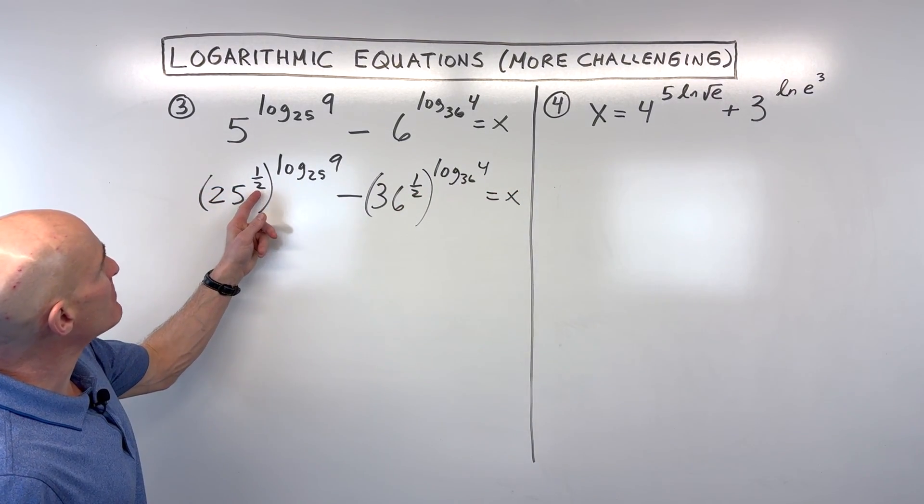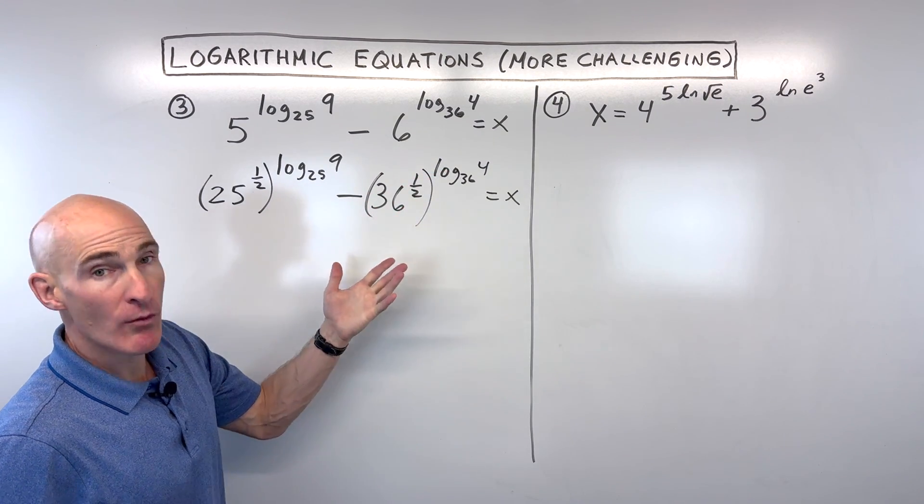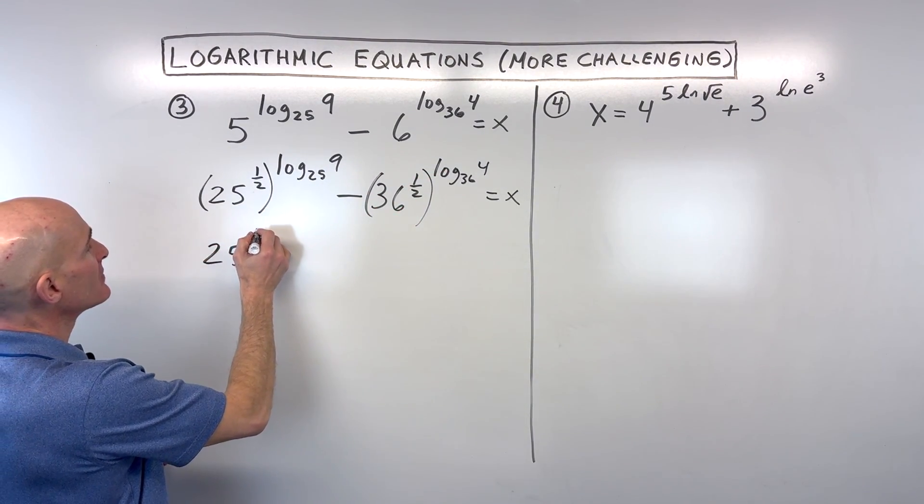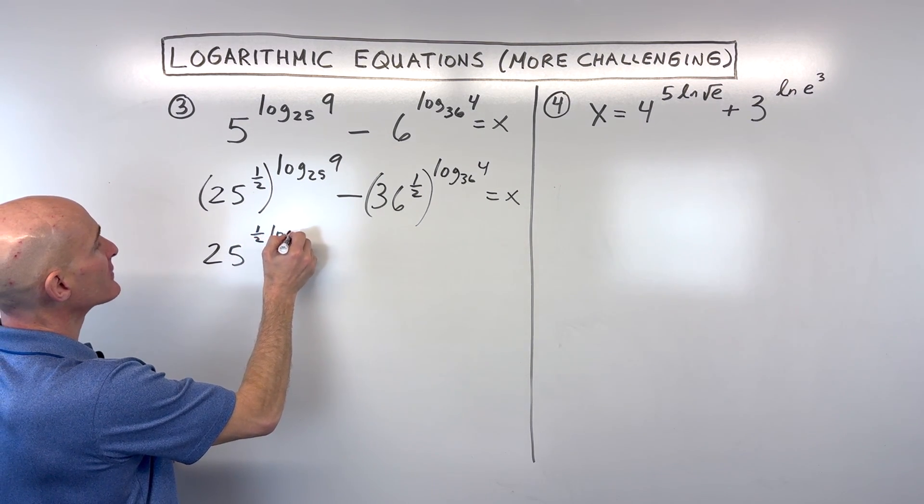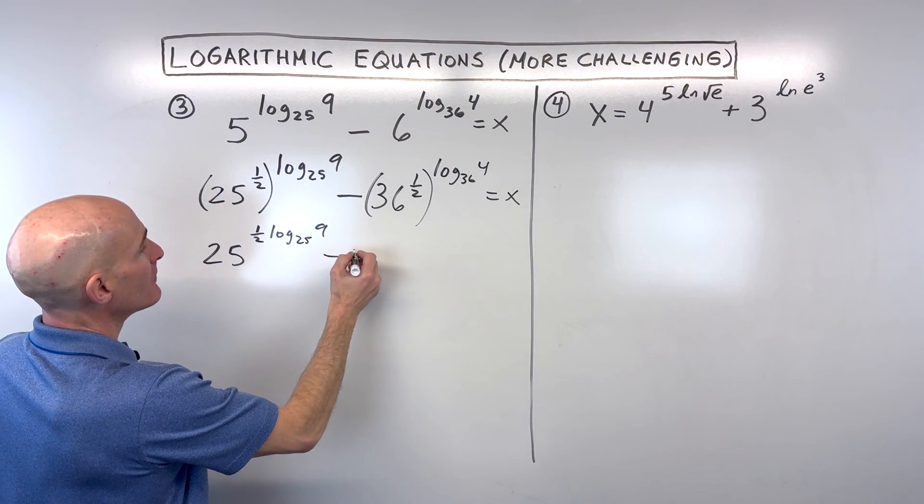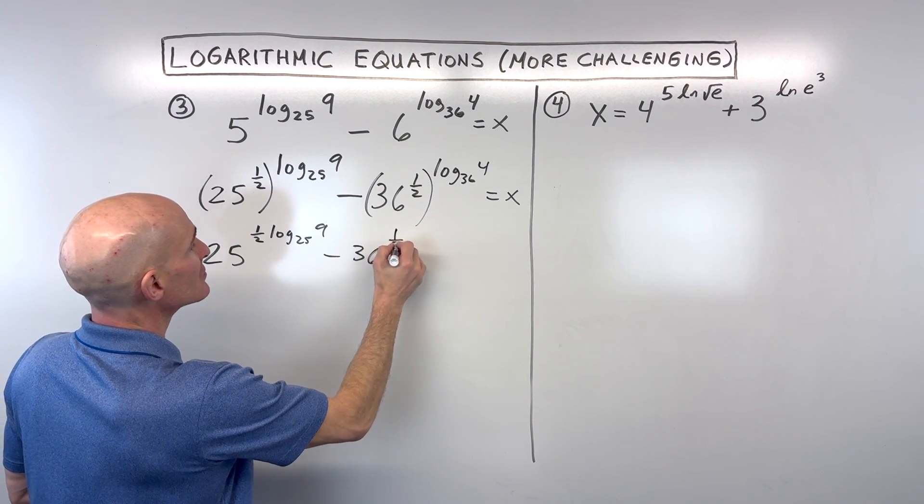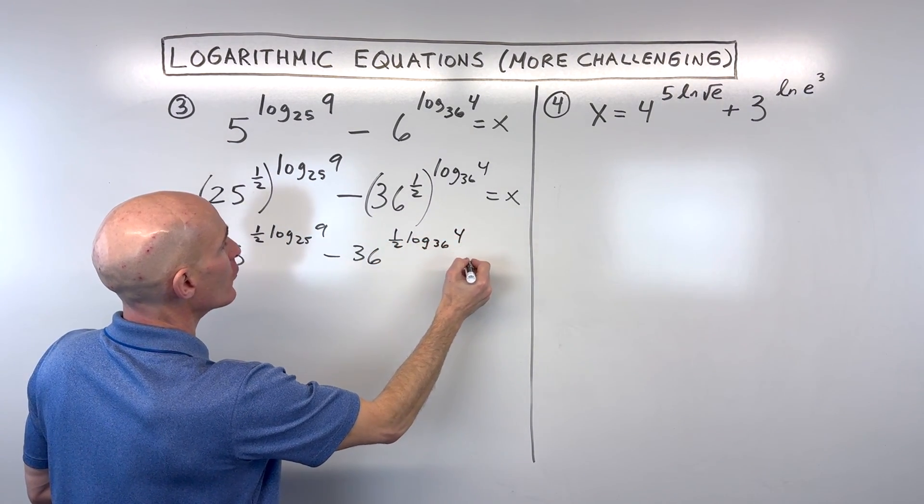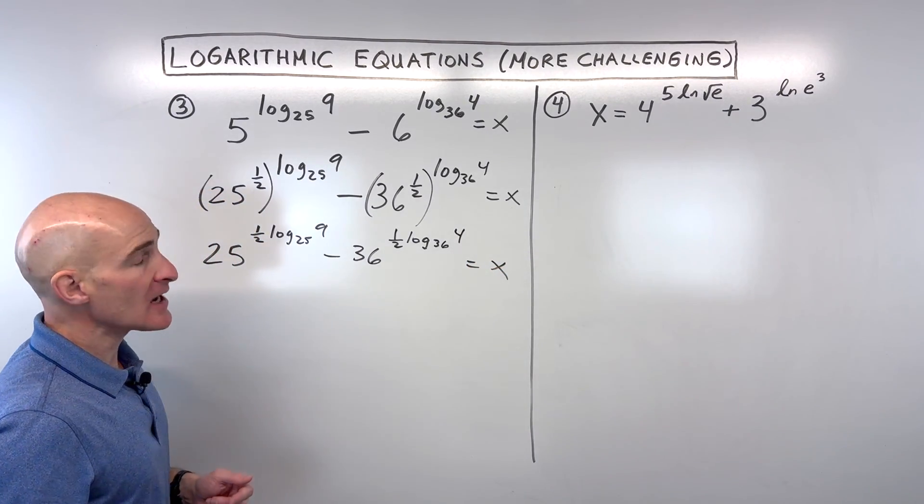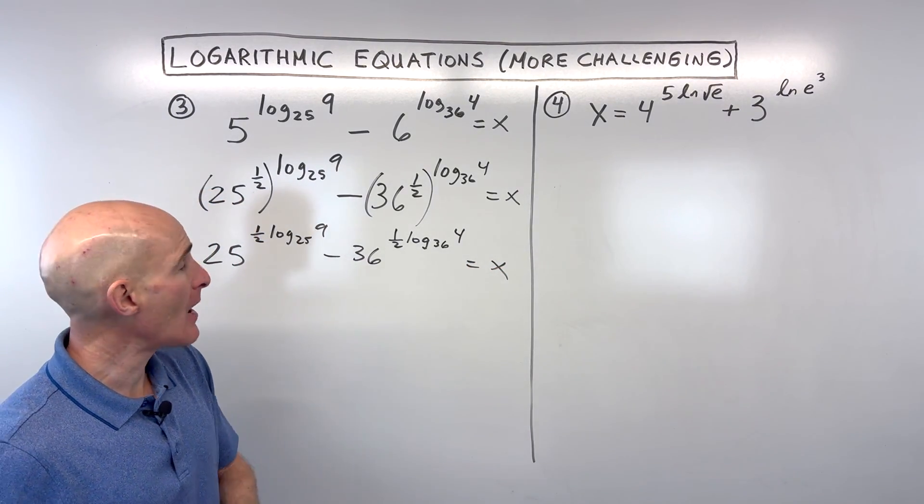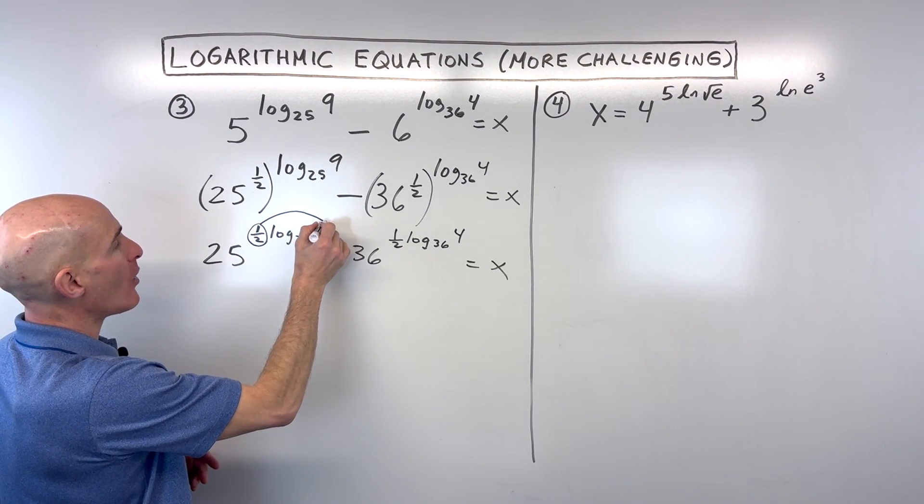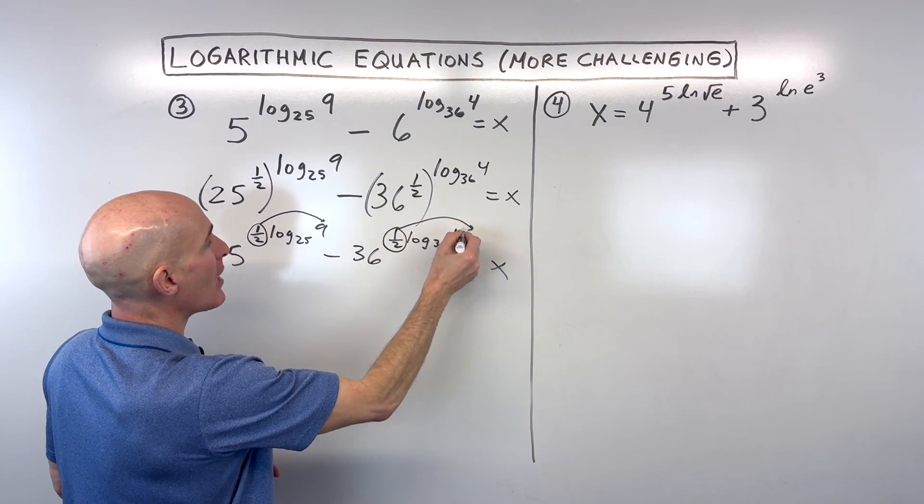But now, let's take a look at this. Power to a power, what do we do? We multiply the exponents. So that's going to look like 25 to the 1 half times log base 25 of 9 minus 36 to the 1 half times log base 36 of 4. Now, let's take a look at the power property of log. So whatever's in front here, you can bring it up as a power. Same thing here. Whatever's in front, we're going to bring it up as a power.